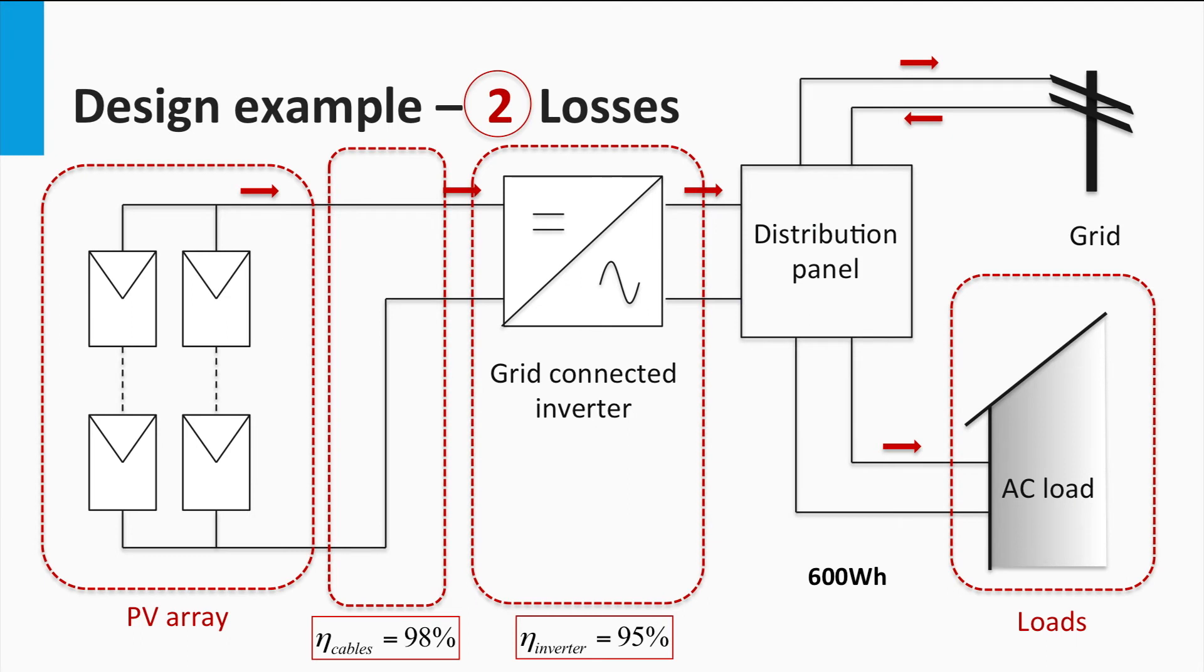Let us first account for the losses in the system. This would help us find the energy needed at the output of the PV array to successfully cover the daily load. Here, we assume the same component efficiencies as we saw in the earlier example.